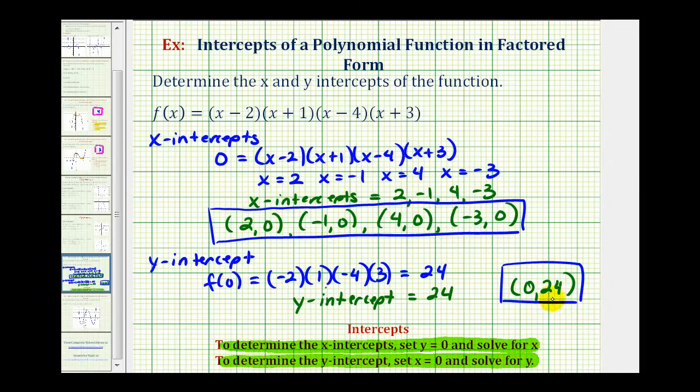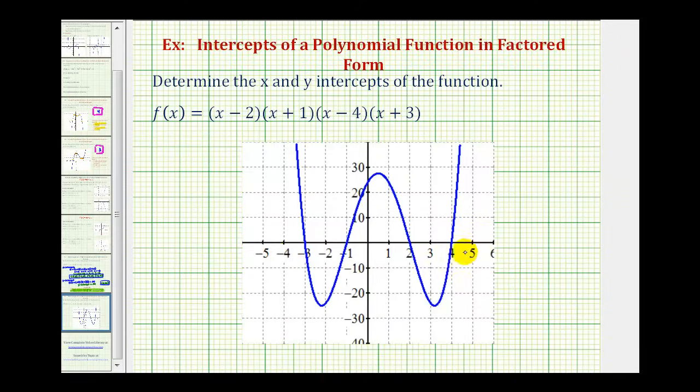And then of course to verify this, we can graph the function. So let's take a look at the graph. Notice how we do have four x intercepts at negative three, negative one, positive two, and positive four on the x axis. And our y intercept does look like it's 24. So the graph does verify our work is correct.